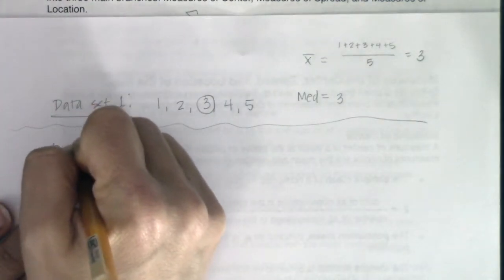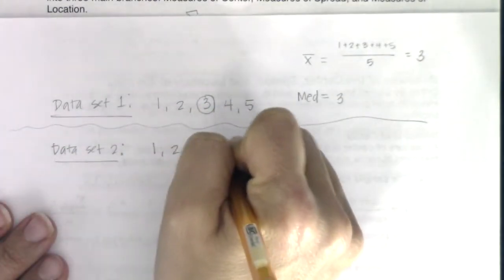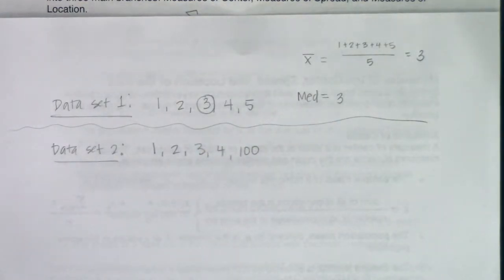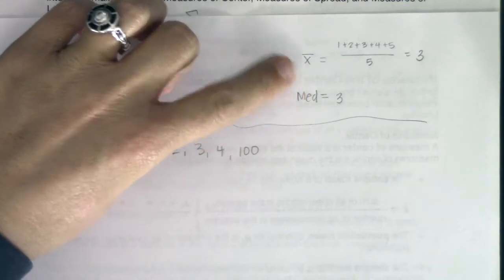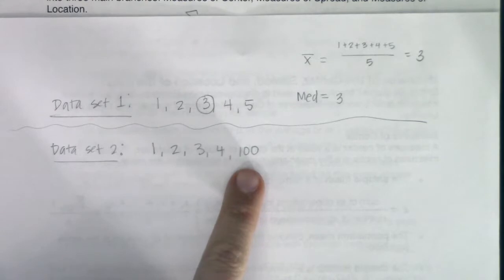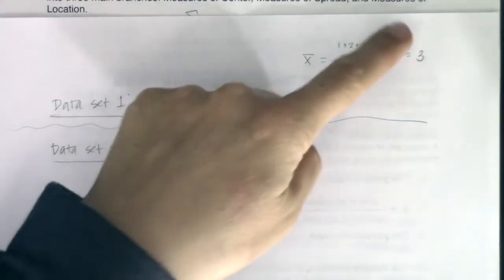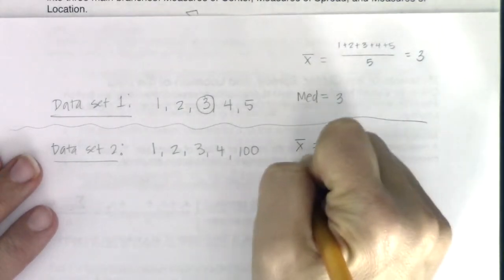Let's try data set two: 1, 2, 3, 4, 100. We're going to answer the same two questions: what is the mean, what is the median? Before I show you the answers, think — is the mean about to change? Is the median about to change? What happens when you have an outlier? Even though we haven't talked about what an outlier officially is, this is one — 100 is an unusually high number. Our centers were around 3, and all of a sudden this is up at 100.